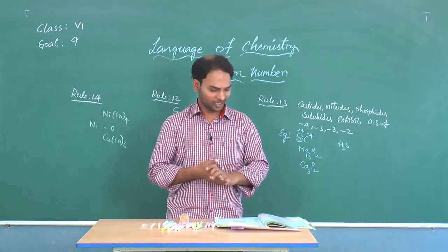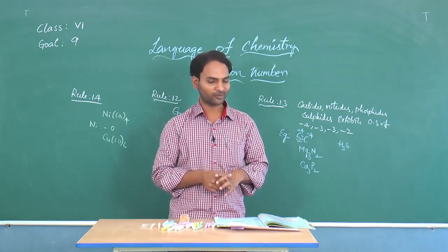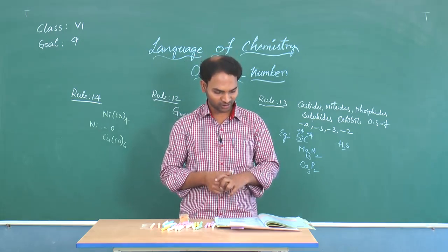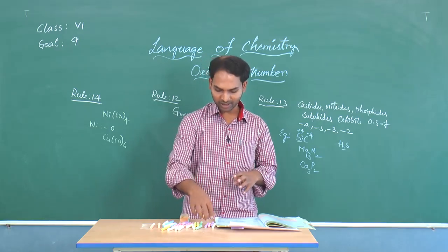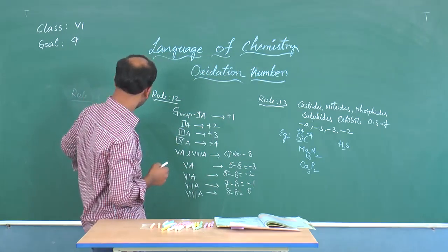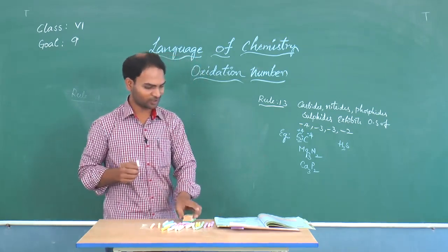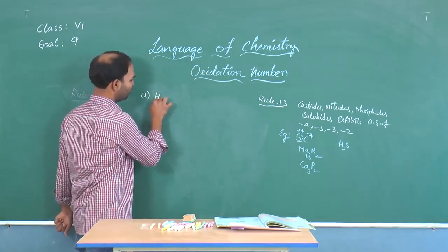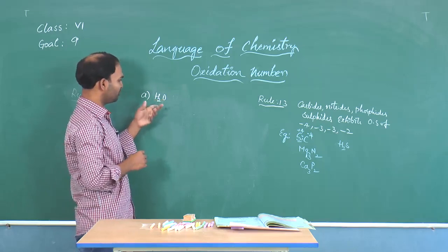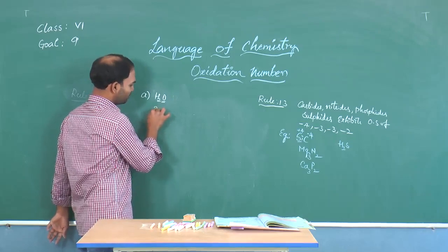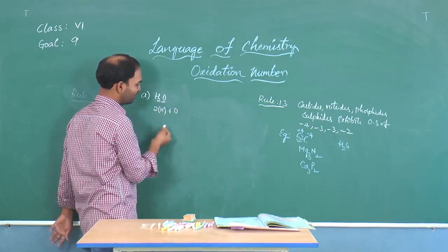Now let's look at the assignment for this goal, which includes MCQs, assertion-reason, and statement-type questions. The first MCQ asks: among the following compounds, in which does oxygen have a positive oxidation number? Options include water, OF₂, nitric acid, and all of the above. For water (H₂O): 2(+1) + x = 0, so x = minus 2. Oxygen is not positive in water.